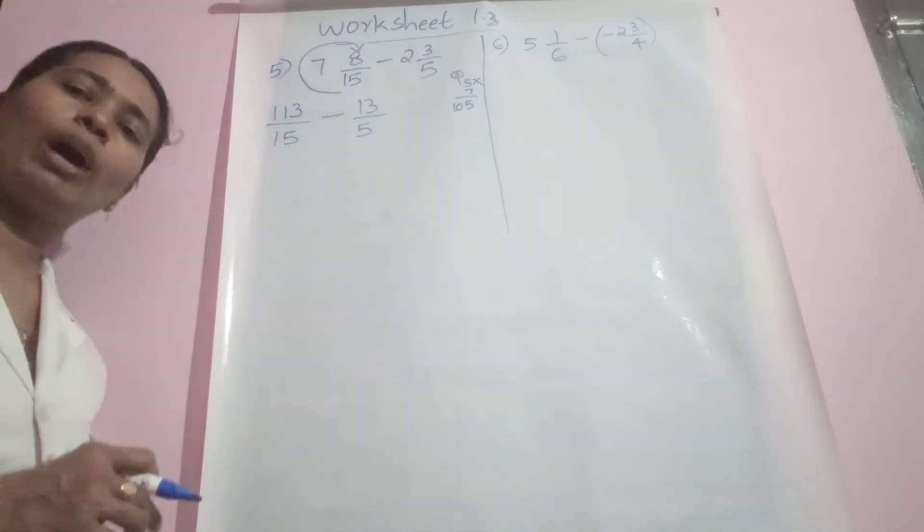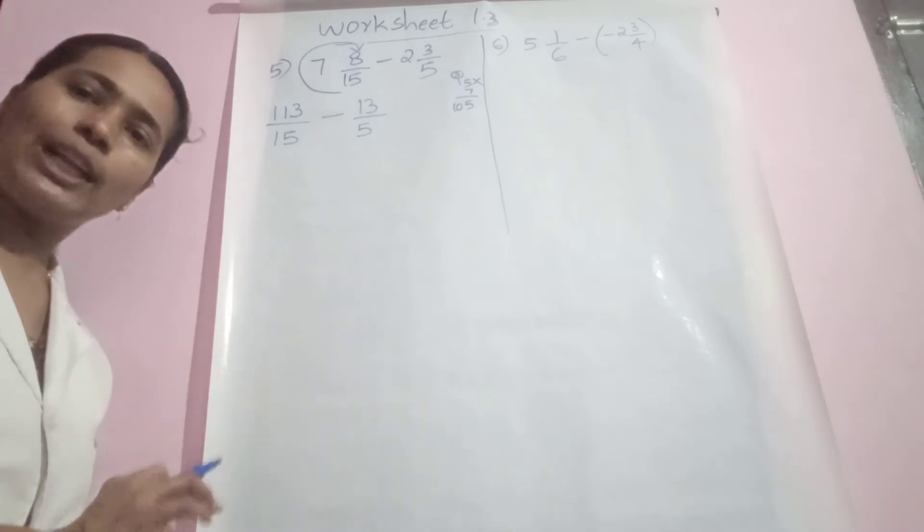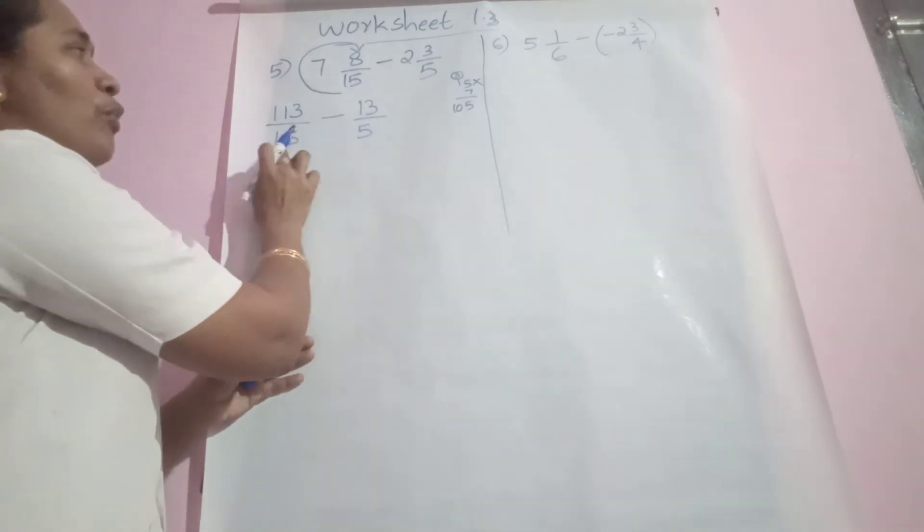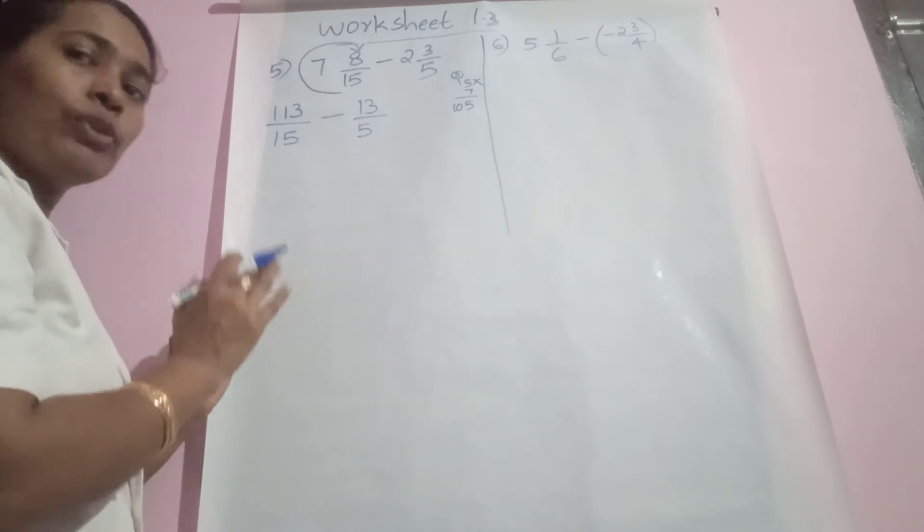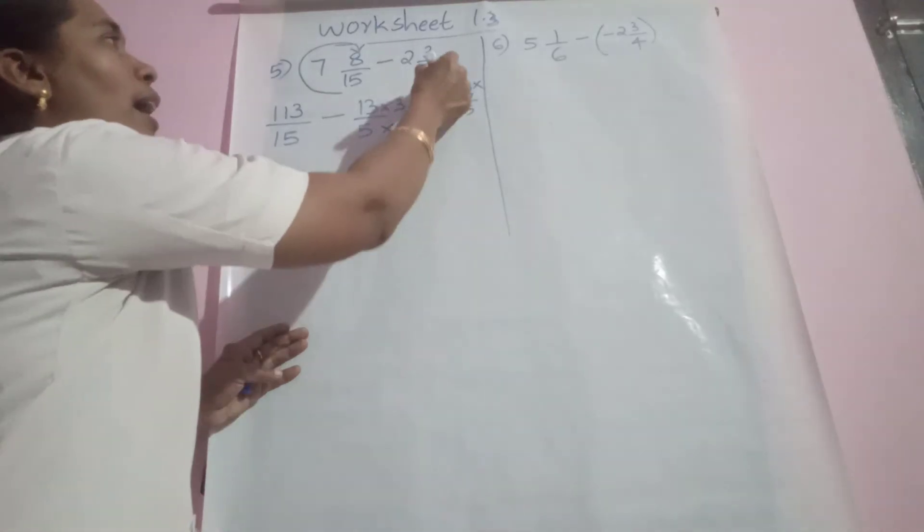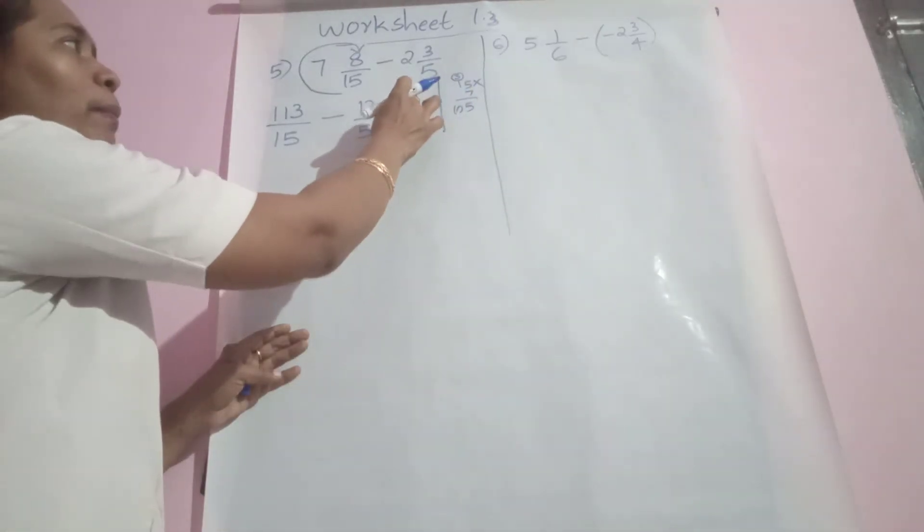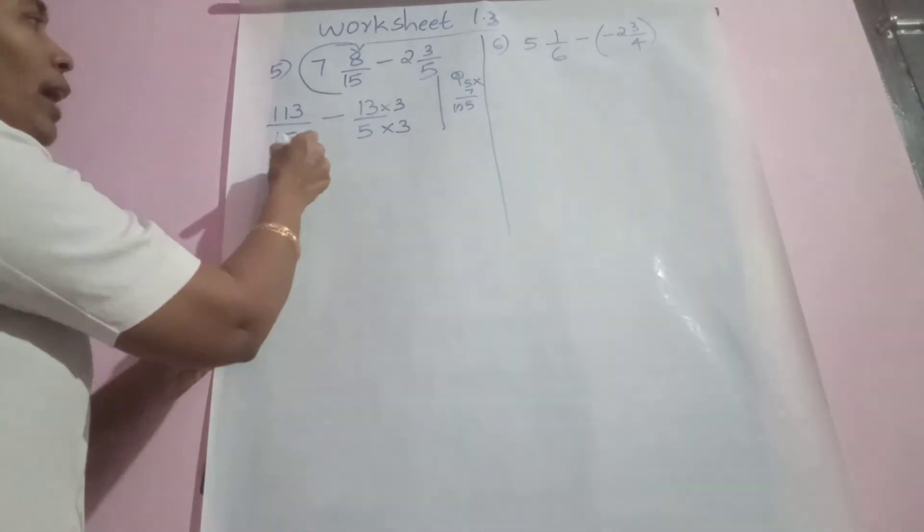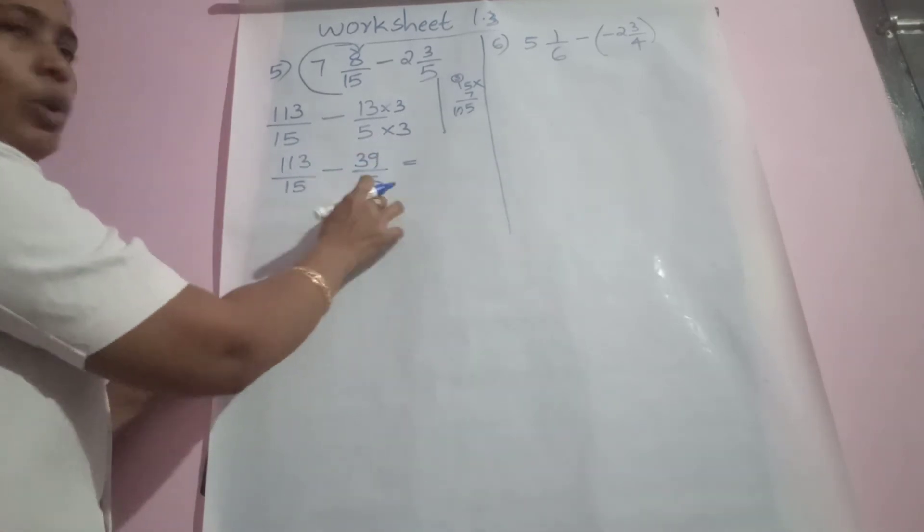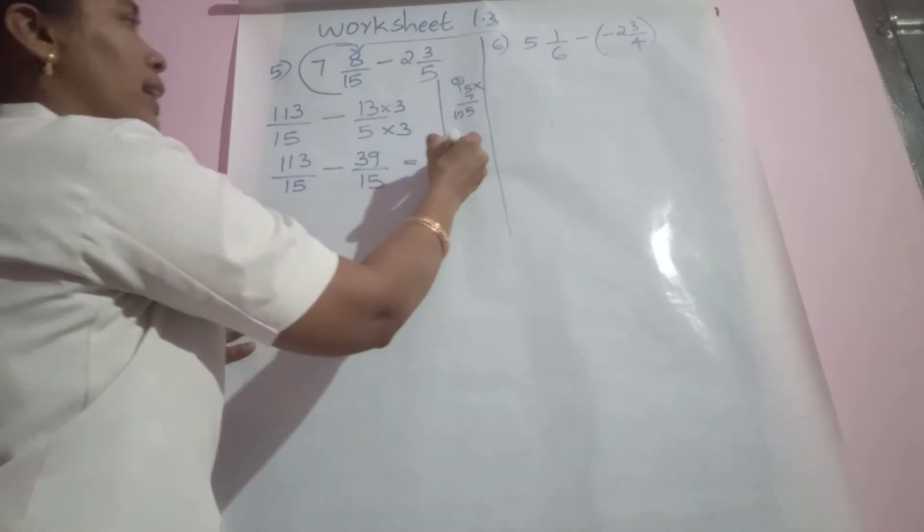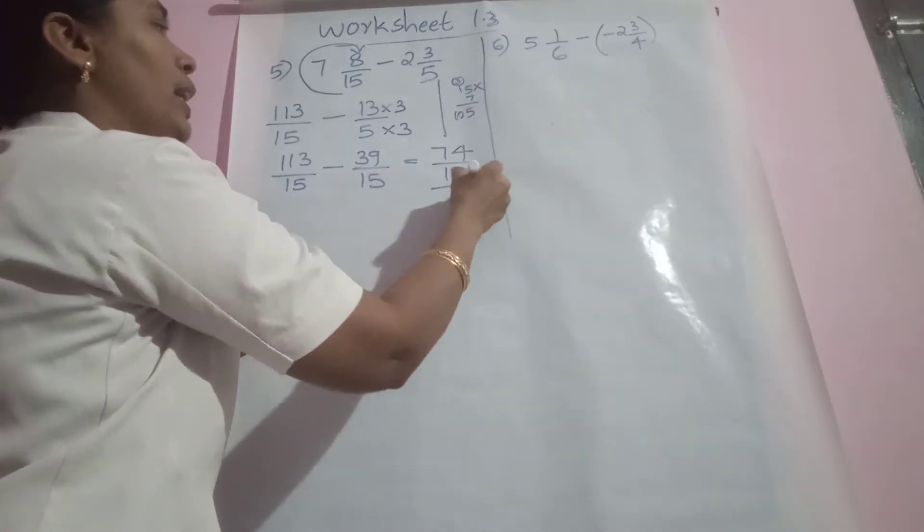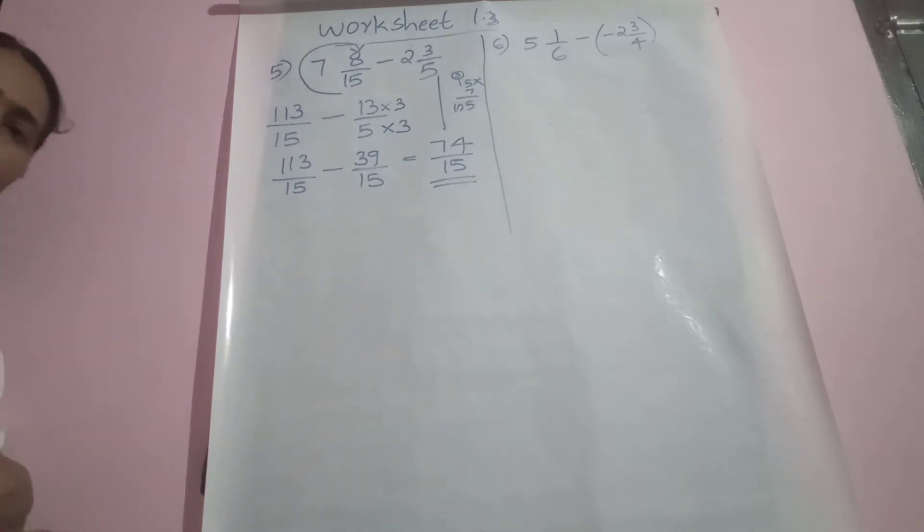Previous cases teacher told you to apply cross multiplication method. Here it is also applicable, but see this: 5 and 15 are connected numbers. 15 is a multiple of 5, so which number is needed to make it 15? Three. So we can multiply the second rational number by 3. So we have 113/15 minus 39/15. Both having the same denominator. Now subtract: 74/15.